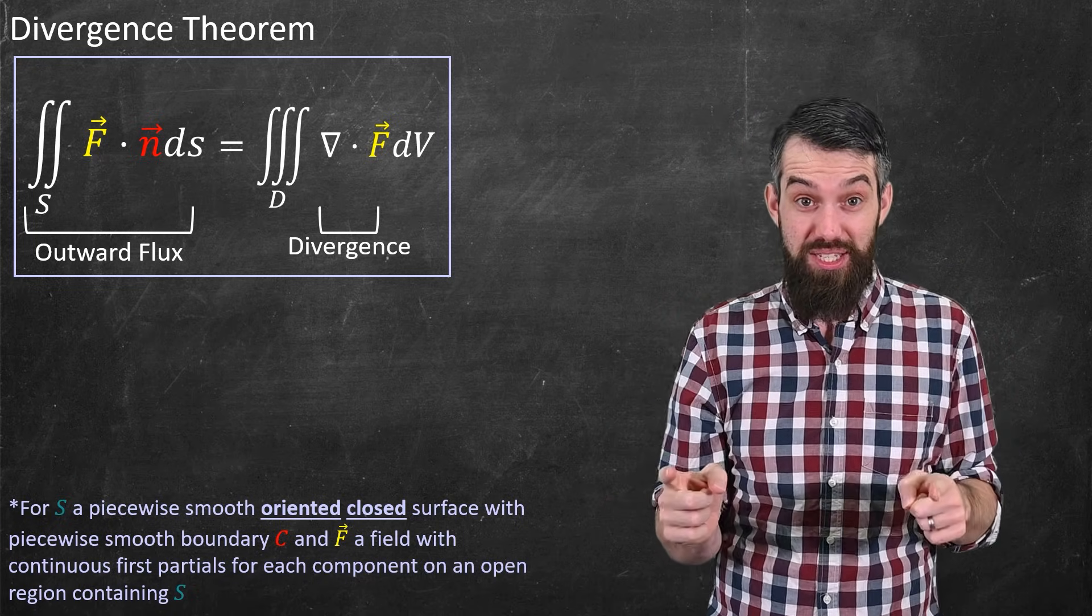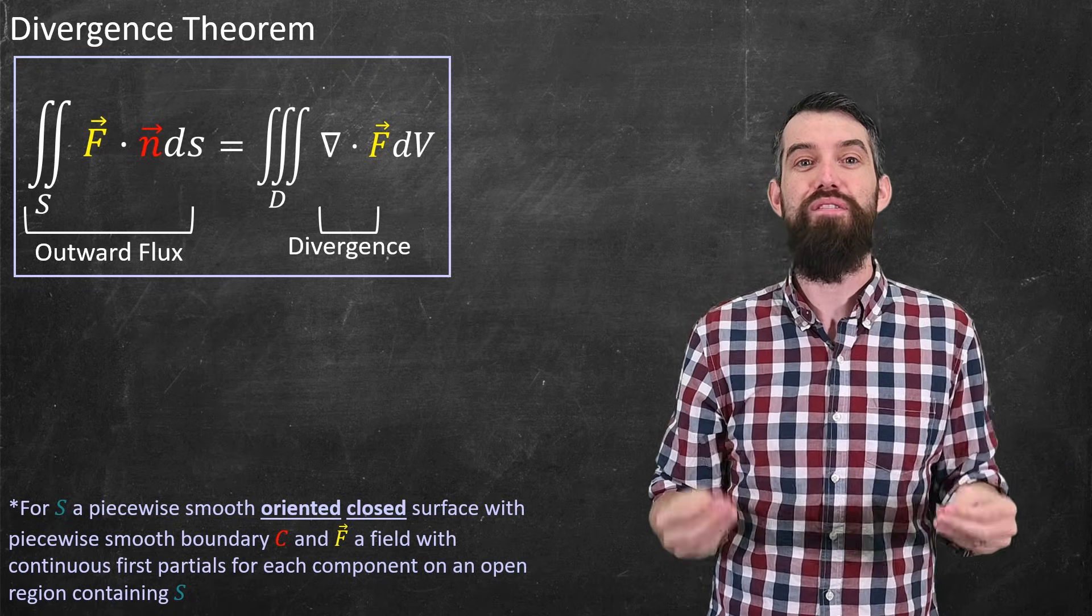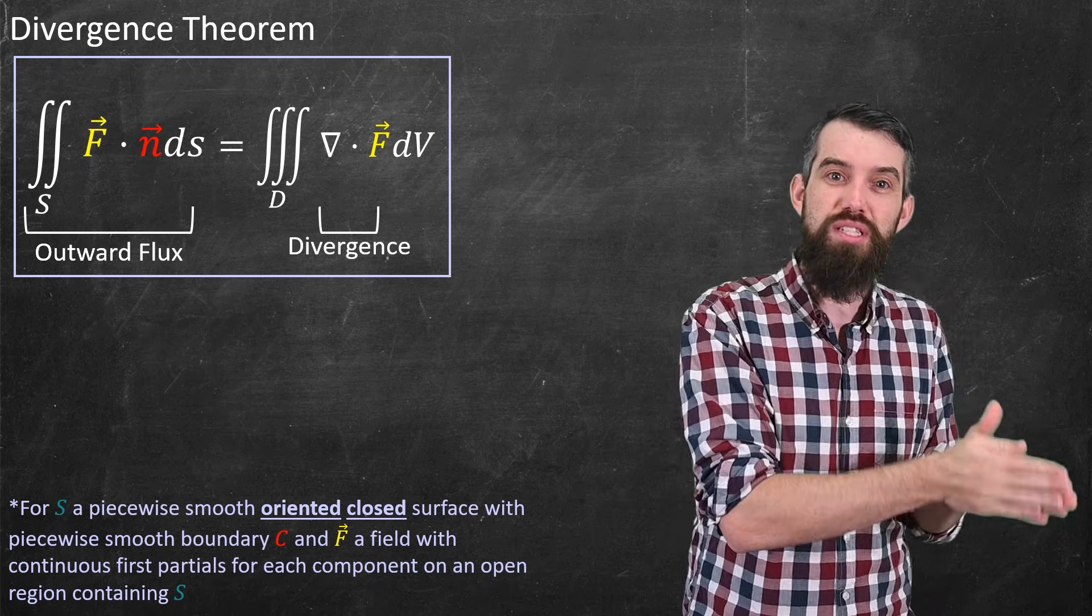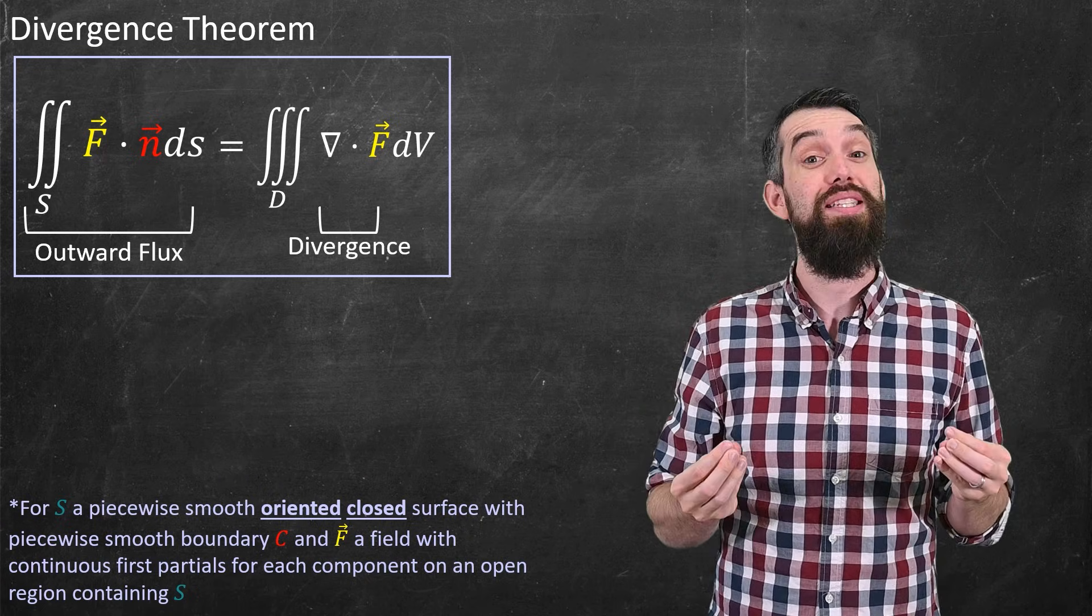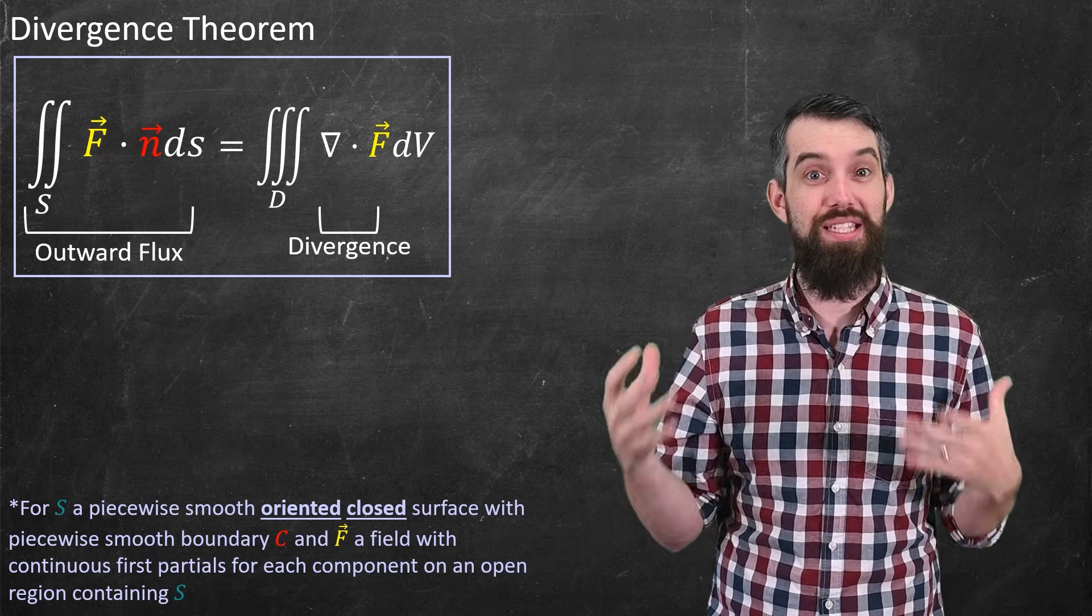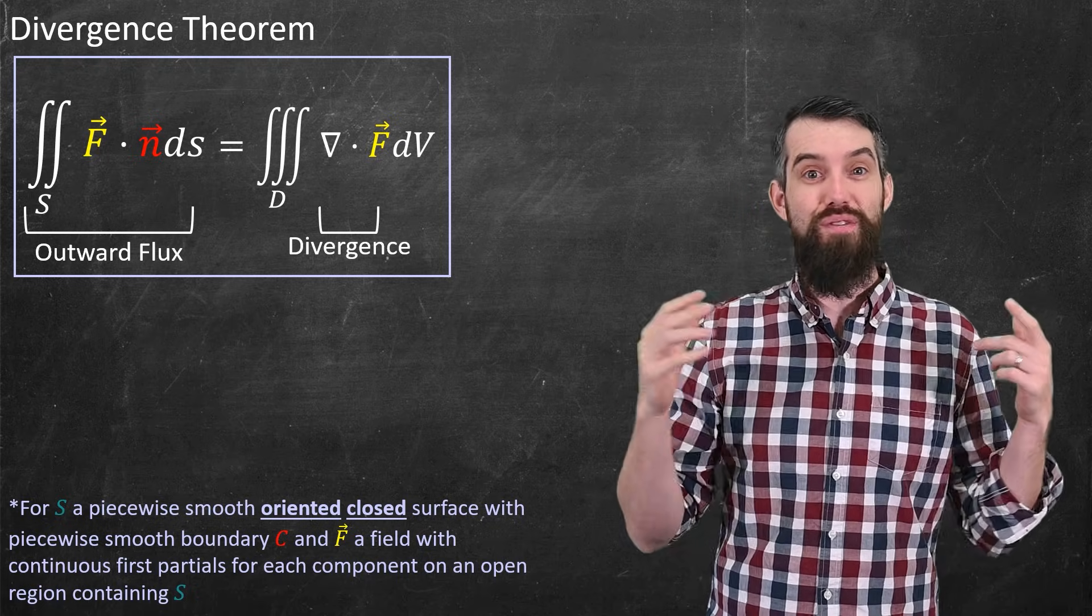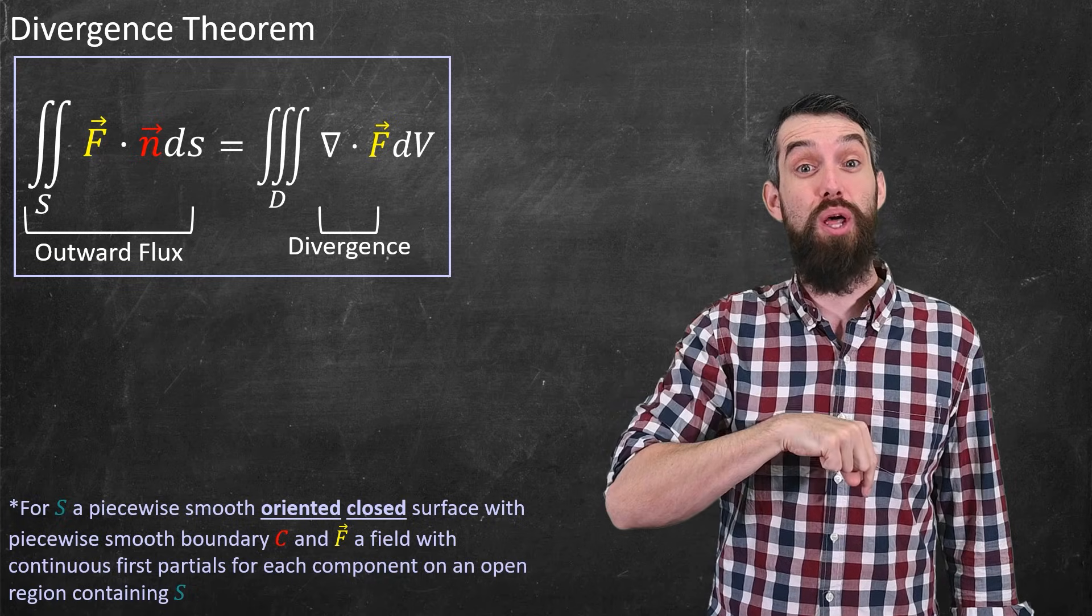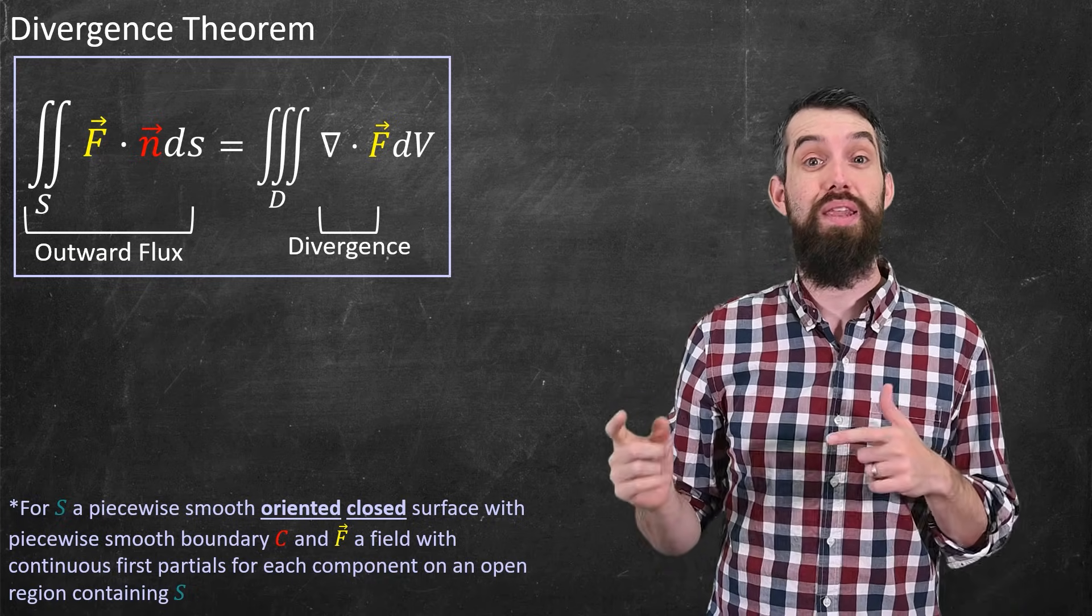Alright, so that was the divergence theorem. Coming up, I need to do some examples for sure, but I also want to do a video that unifies the divergence theorem, Stokes' theorem, Green's theorem, and the fundamental theorem of calculus, and see that they're all different types of generalizations of the same thing. So that and more coming up in our vector calculus playlist. If you have any questions, please leave them down in the comments below, give the video a like for the YouTube algorithm, and we'll do some more math in the next video.